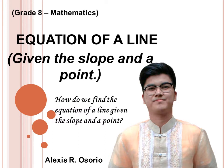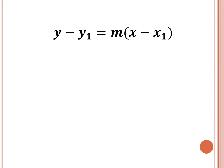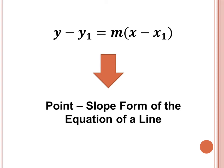We will have Grade 8 Mathematics today, and our lesson is about the equation of a line given the slope and a point. In this lesson, we will learn how to find the equation of a line given the slope and a point. The formula is y minus y-sub-1 is equal to m times the quantity x minus x-sub-1. This formula is known as the point-slope form of the equation of a line.